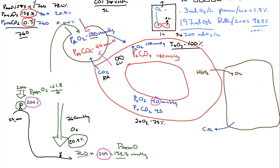Nitrogen has a low solubility coefficient — it doesn't really go into blood. But nitrogen serves an important purpose: it exerts pressure on the walls of the alveoli. If we only had oxygen in the atmosphere without nitrogen, when oxygen moved into blood the alveolar walls would collapse. Nitrogen is a placeholder that maintains pressure within the alveoli so they don't collapse as oxygen moves in.